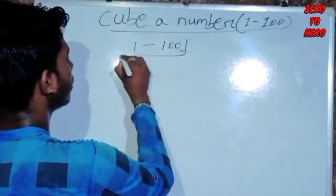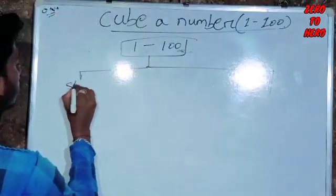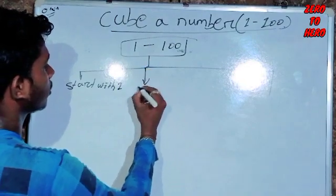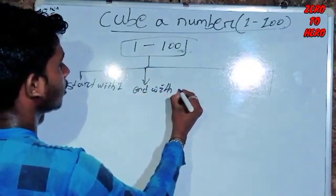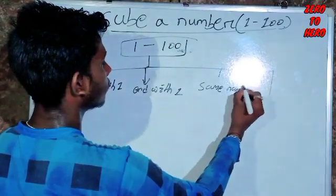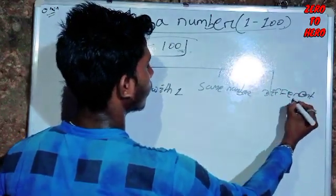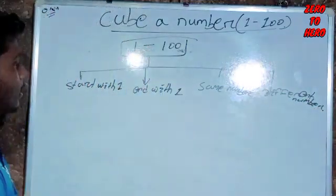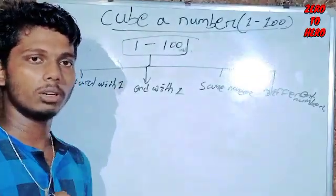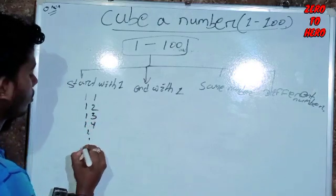1 to 100 — 1 to 100 is the range. Starting with one and ending with one, same number and different number. For the first category, start with one: numbers in the 10s place — 11, 12, 13, 14, up to 19.